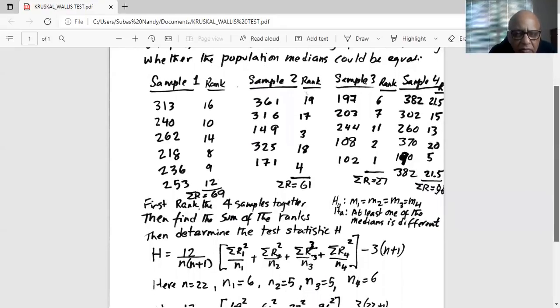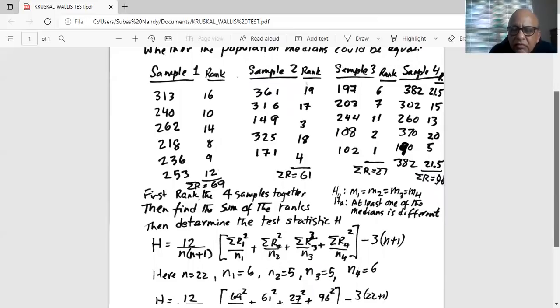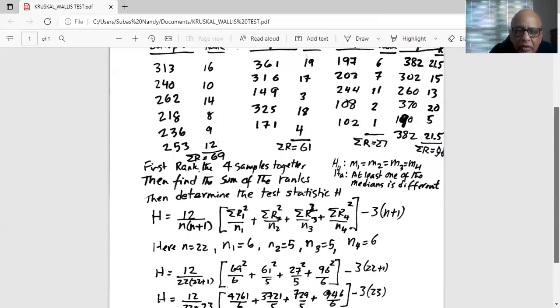And the null hypothesis is median one equals median two equals median three equals median four. Alternate: at least one of the medians is different. We calculate the test statistic H, which follows this formula.